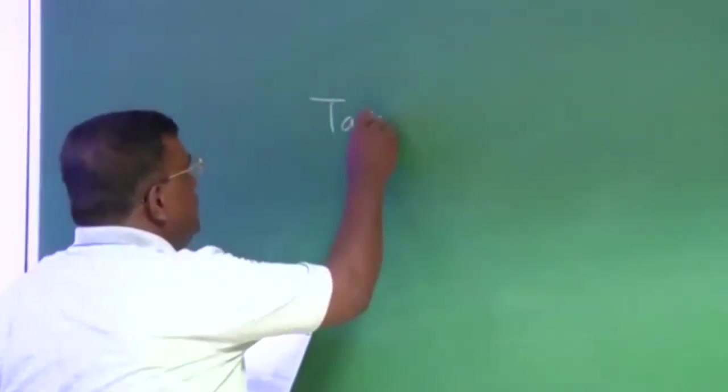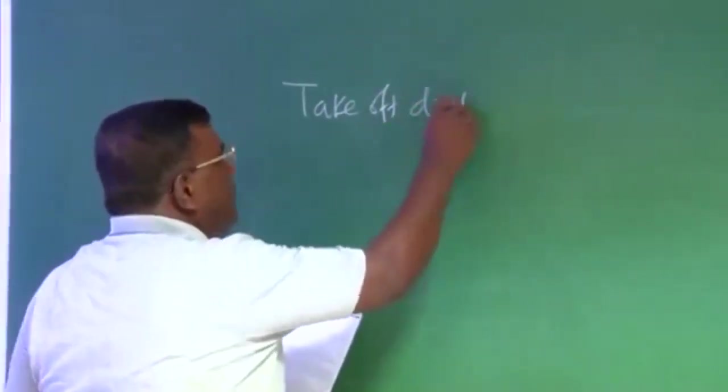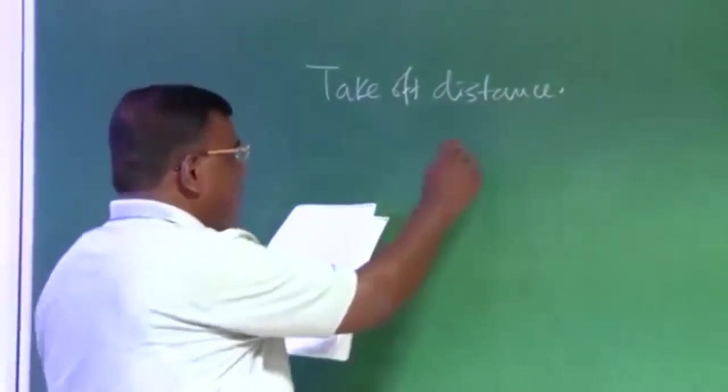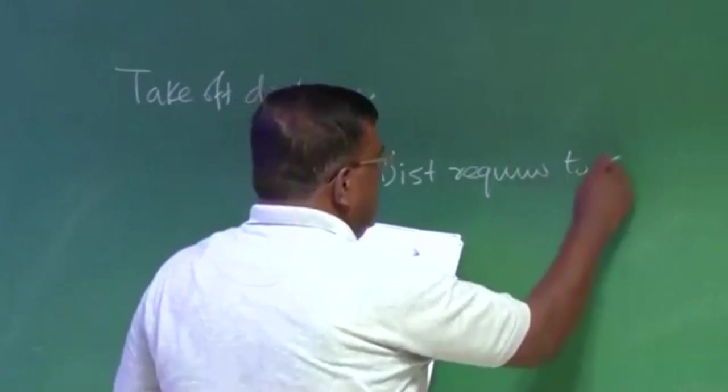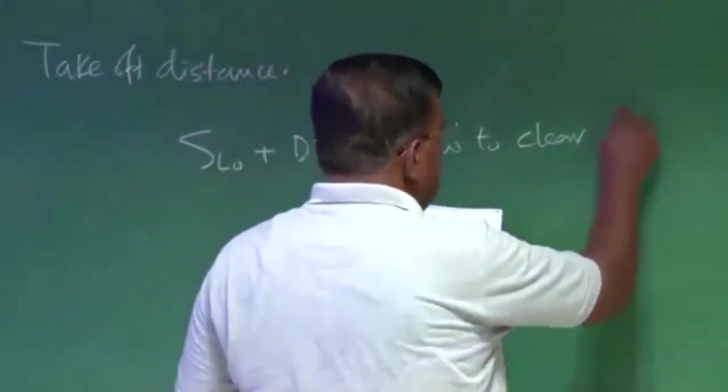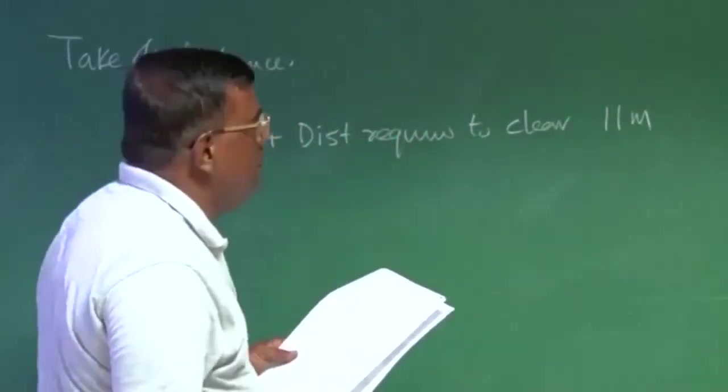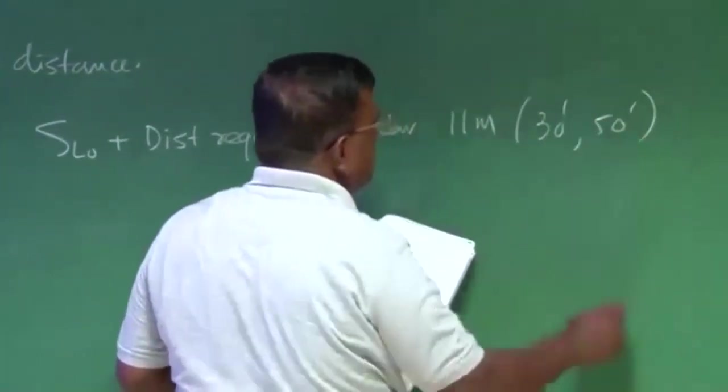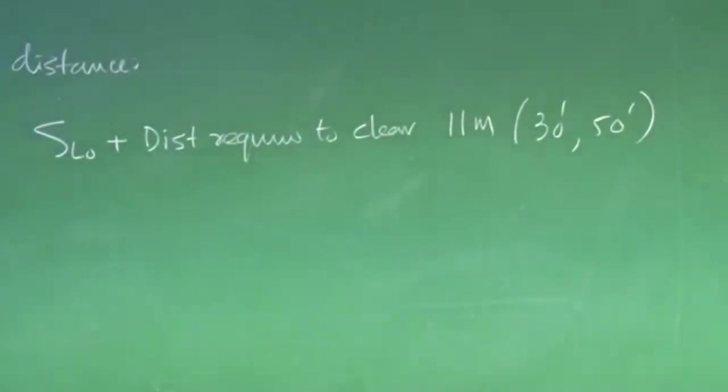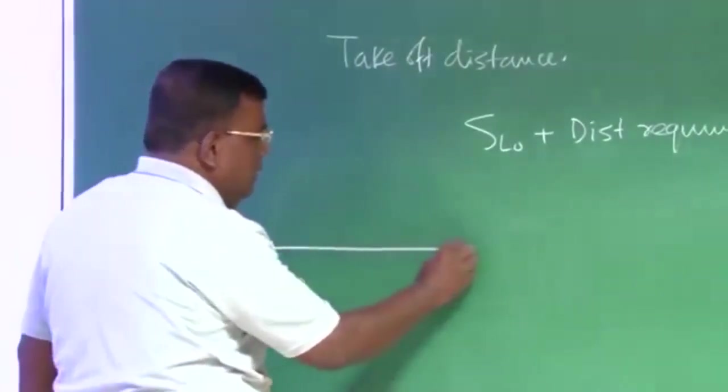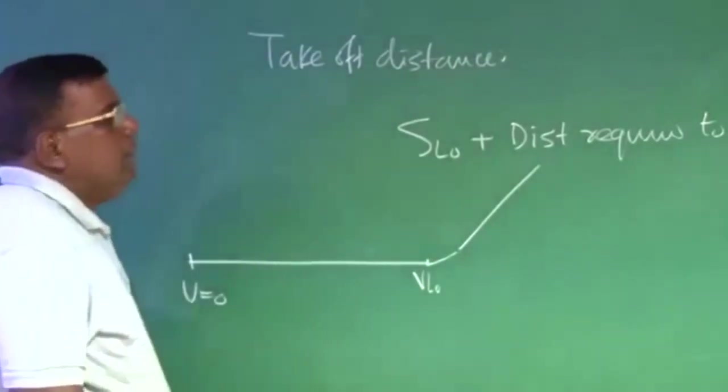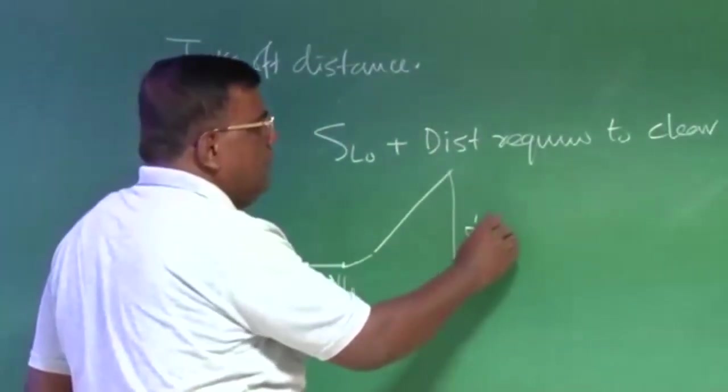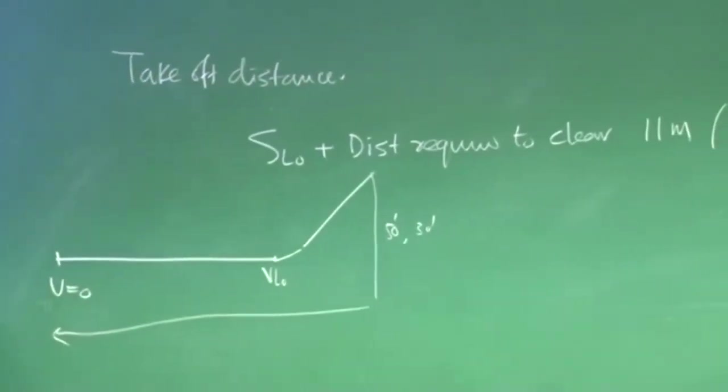During takeoff, he will give more weightage towards thrust loading. So he will pick a thrust loading value T by W, let us say he picks as 0.3. He knows that CL max I can increase by using flaps, high lift devices. So depending upon type of aircraft, for example if you are using Cessna 206, you will not put very complicated flaps, you will put a plain flap. If you say A320, then you put lot of complicated flaps.